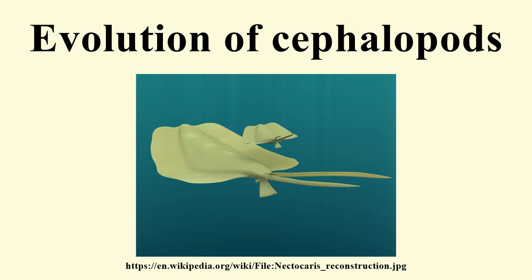The wide-siphuncled Discosorida and Dissidocerida both emerged during the Darriwilian. The direction of coiling would prove to be crucial to the future success of the lineages; endogastric coiling would only permit large size to be attained with a straight shell, whereas exogastric coiling, initially rather rare, permitted the spirals familiar from the fossil record to develop, with their corresponding large size and diversity. Exogastric means the shell is curved so that the ventral side is longitudinally convex, allowing the funnel to be pointed backwards beneath the shell.